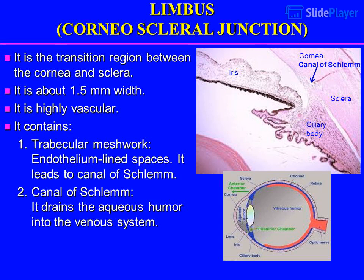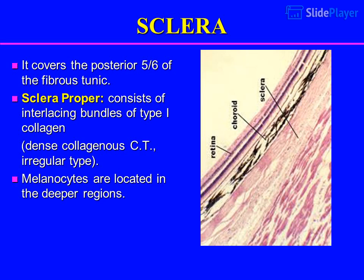Sclera: it covers the posterior five-sixths of the fibrous tunic. The sclera proper consists of interlacing bundles of type I collagen — a dense collagenous connective tissue of irregular type. Melanocytes are located in the deeper regions.